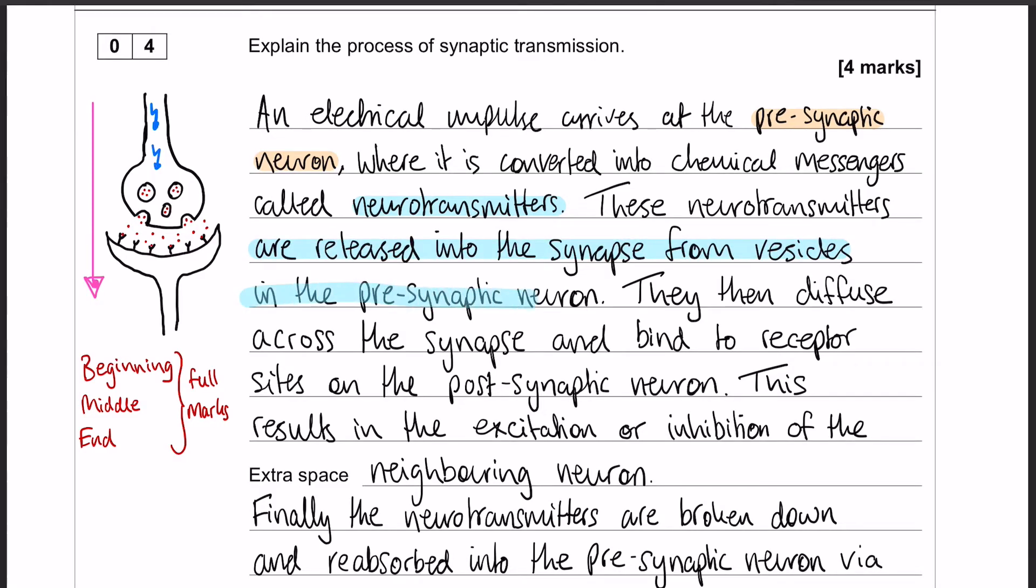And they get released from the vesicles into the synapse. Once they are in the synapse they diffuse across the synapse and bind to the receptor sites on the post-synaptic neuron.